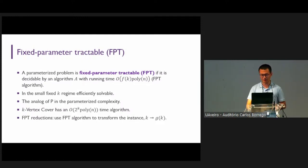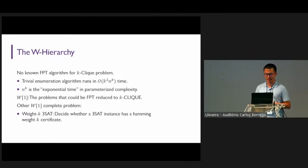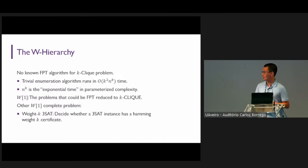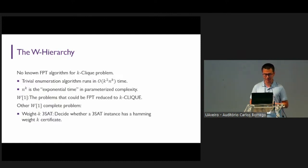Unlike the k-vertex cover problem, there is no known FPT algorithm for the k-clique problem. The brute-force enumeration algorithm would run in k^2 times n^k time, and n^k can be thought of as exponential time in the parameterized complexity setting. So like the 3-SAT problem in classical complexity, we use the k-clique problem as a complete problem for one parameterized complexity class, which we call W[1]. There are other W[1]-complete problems as well — for example, the weight-k 3-SAT problem, where we decide whether a 3-SAT instance has a Hamming-weight-k satisfying assignment.